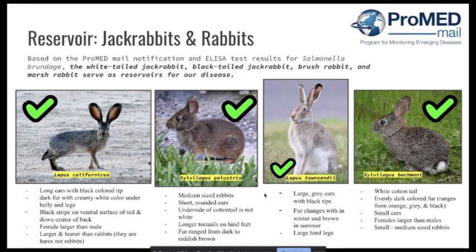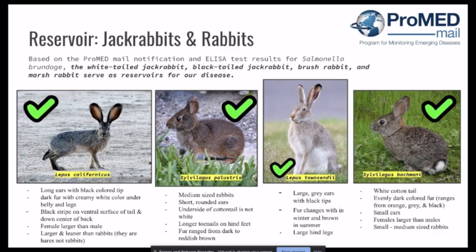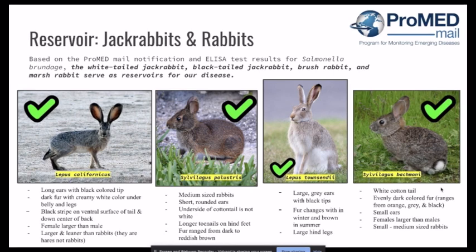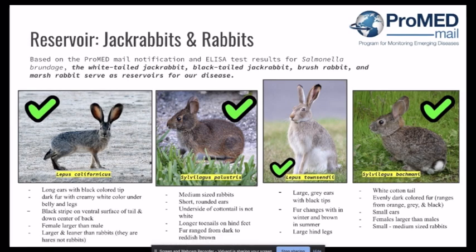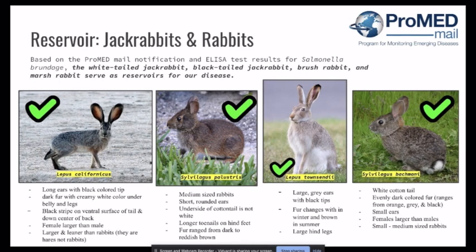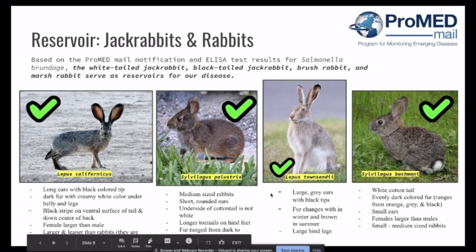For our next reservoir, we have Sylvilagus palustris. This is a medium-sized rabbit; it's short, has rounded ears, and the underside of the cottontail is not white — this is what distinguishes them from the other white cottontail. They have longer toenails on their hind feet, and their fur ranges from dark to reddish brown. For our next rabbit, we have Lepus townsendii. They are large, have gray ears with black tips, their fur changes to white in winter and brown in summer, and they have large hind legs, which distinguishes them from other jackrabbits along with their seasonal coat changes.